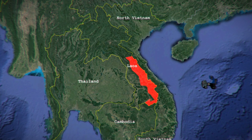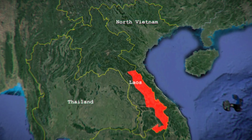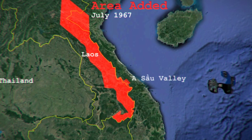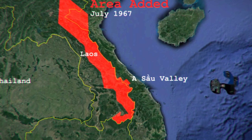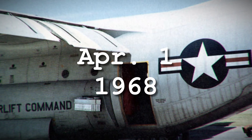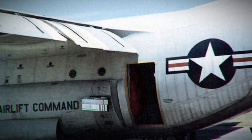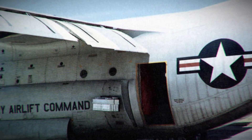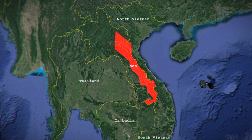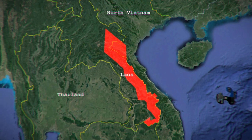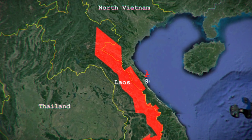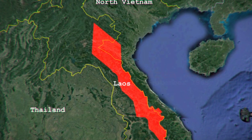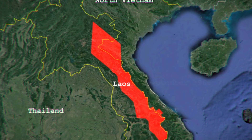In July of that year, the operation was expanded to include portions of far western North Vietnam, and in September, the A Shau Valley was added. On April 1, 1968, cloud seeding operations over North Vietnam were halted after bombing restrictions were put into place. The southern region of North Vietnam was added to the operational area in September of 1968, then removed shortly after a halt of conventional bombings in November of that year.